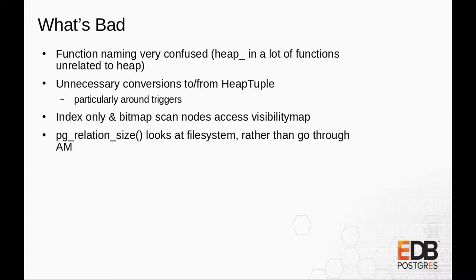Now, what did we do wrong? One thing we ran out of time to fix is a lot of confusion about function names. There are many functions starting with heap_something that have nothing to do with heap — for example, even creating an index calls heap_create_with_catalog. A lot of functions and files should be renamed but weren't. Now it's really weird that heap_create_with_catalog goes into a table create callback and then potentially back into heapam.c. We'll have to rename those functions — e.g., heap_create_with_catalog should become something like create_catalog_entry_for_relation.